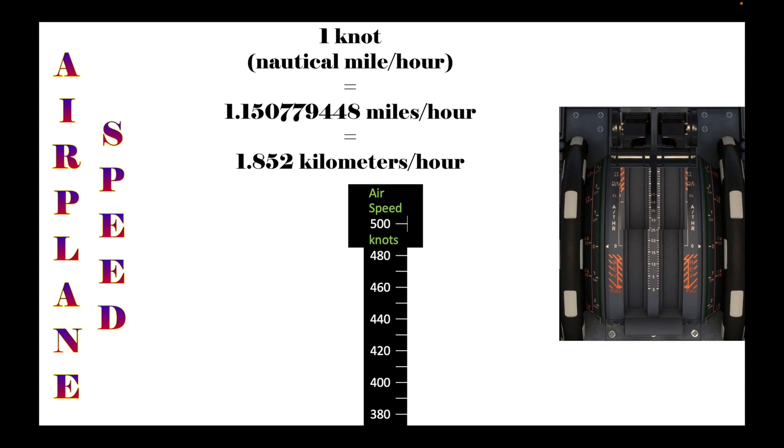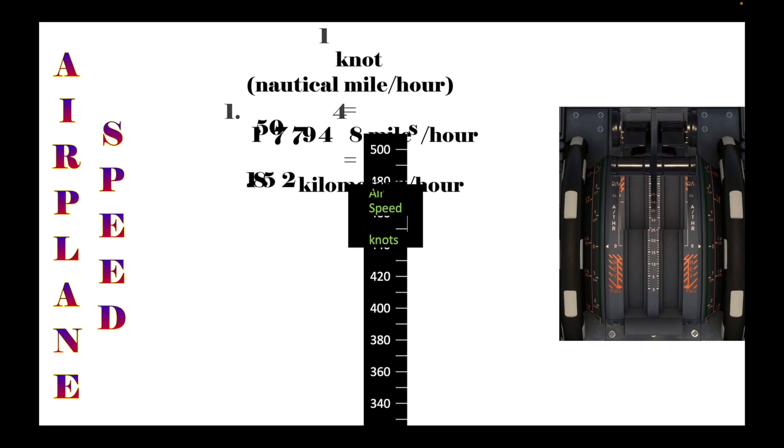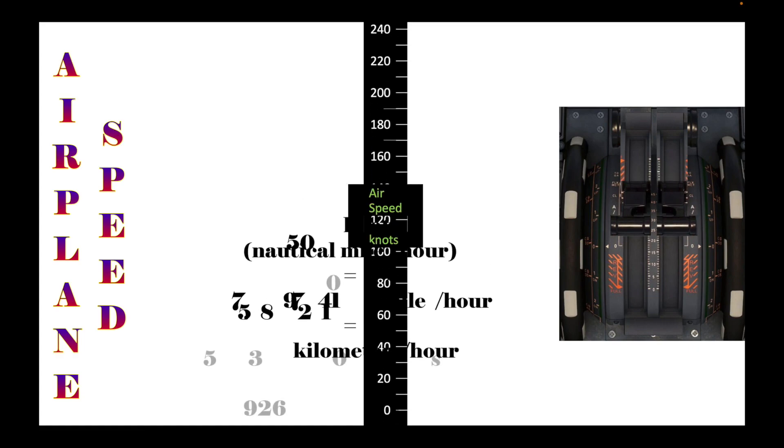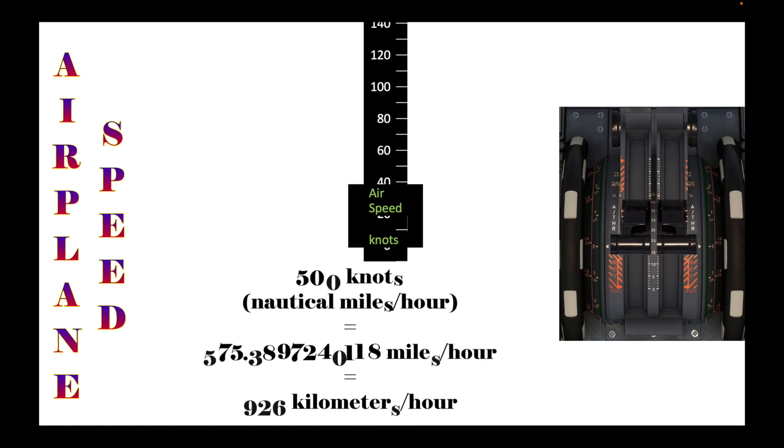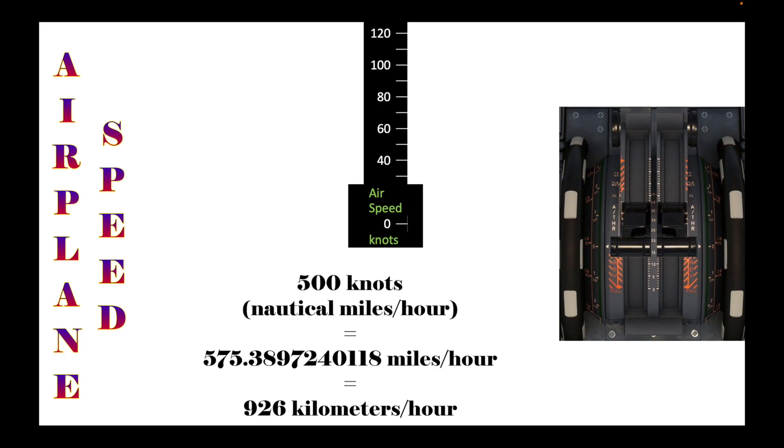In an Airbus 320, the maximum speed is around 500 knots, where one knot or nautical mile per hour is equal to 1.15077945 miles per hour or 1.852 kilometers per hour. Therefore, 500 knots translates to 575.389740 miles per hour or a maximum speed of 926 kilometers per hour. That's the maximum speed of an Airbus 320 plane.